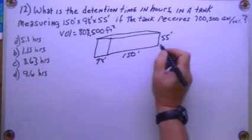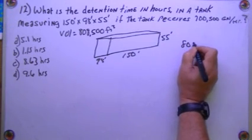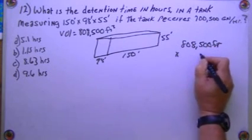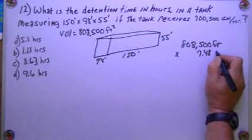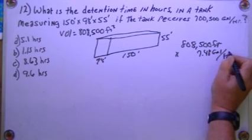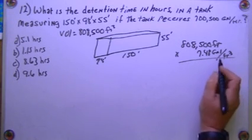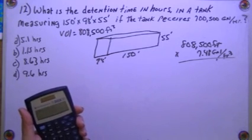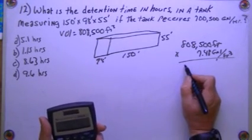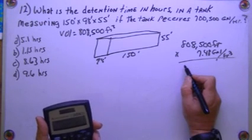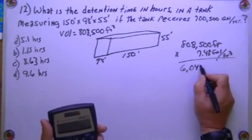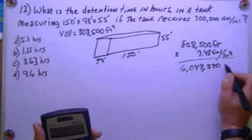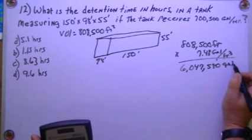So 808,500 cubic feet times 7.48 gallons per foot cubed. It's going to give me times 7.48. 6,047,580 gallons, even, that's interesting.